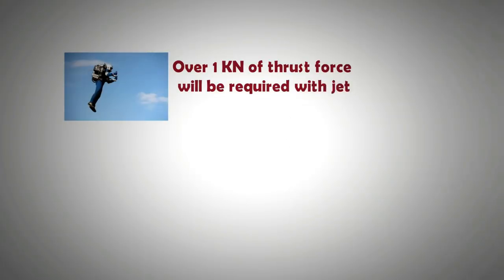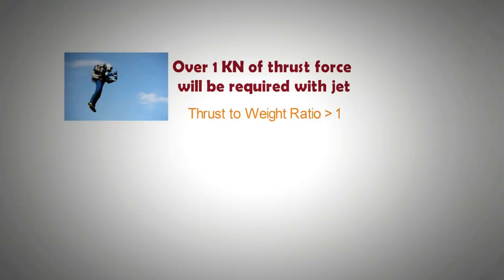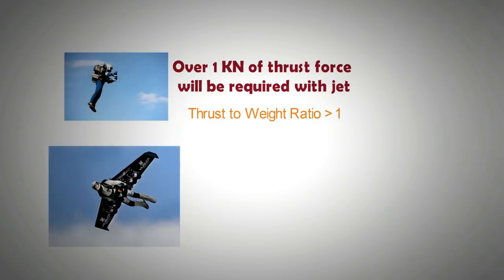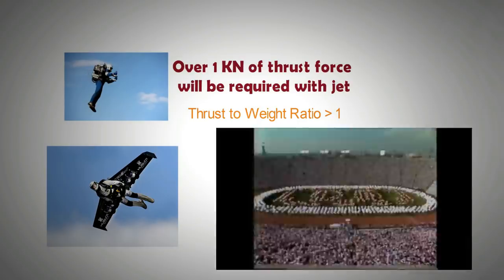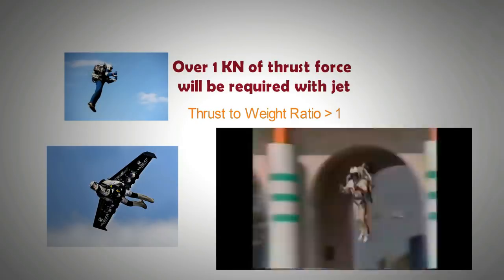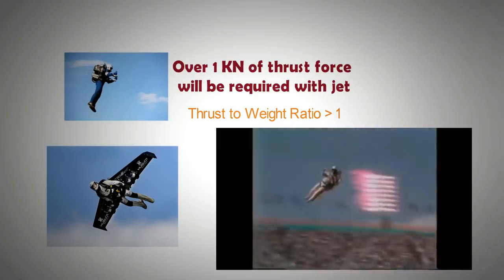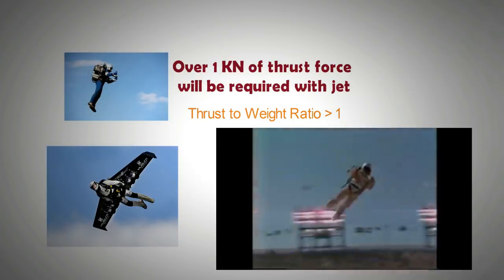This is because thrust to weight ratio should be above 1 for the jetpack to achieve liftoff. If wings are attached to the jetpack then horizontal flight can be achieved with a ratio lower than 1, thus improving the duration of the flight and the range. As for hovering and flight capability, there have been jetpacks made in the past. Most iconic display of this came in the 1984 summer Olympics opening ceremony.